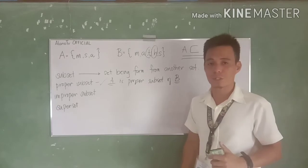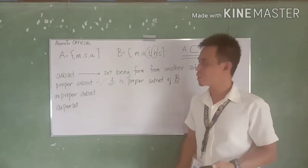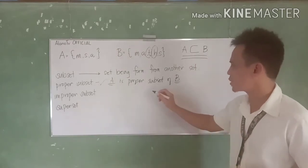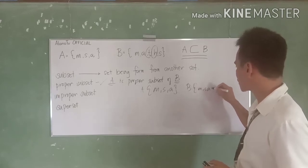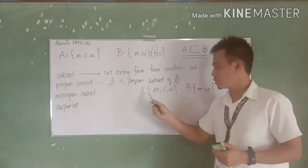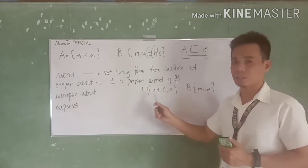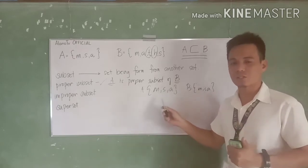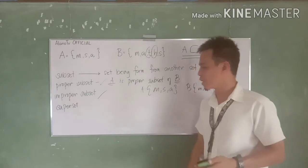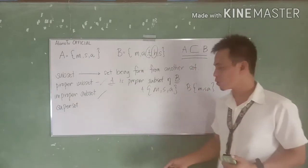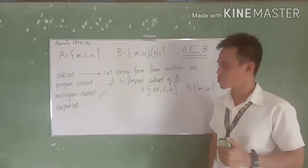Next is improper subset. Take note that every set is a subset of itself. So what if set A = {M, S, A} and set B = {M, S, A}? Your A is a subset of B — yes, because they contain the same elements. But they are equal; they have exactly the same elements with each other. Therefore, they are called an improper subset, because yung element ng set A is the same element of set B, which are exactly the same — they are equal sets.